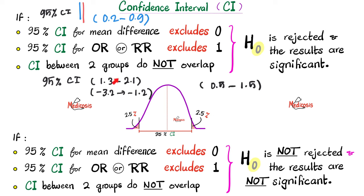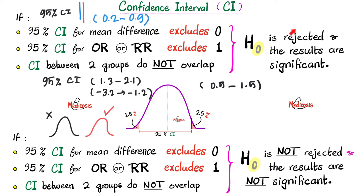The same concept applies to relative risk — ask whether the interval includes or excludes 1. If the confidence intervals between two groups do not overlap at all, that is statistically significant. For example, people who smoked had cancer; people who did not smoke did not have cancer — and they are clearly separated from one another. Go ahead and reject that null hypothesis and throw it into the dustbin of statistical history.